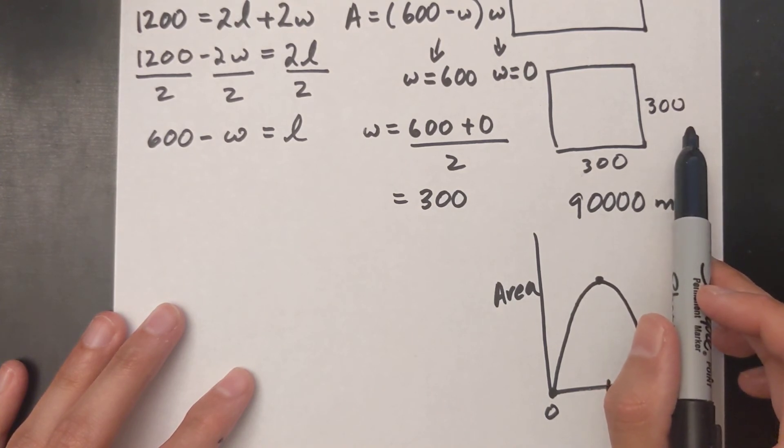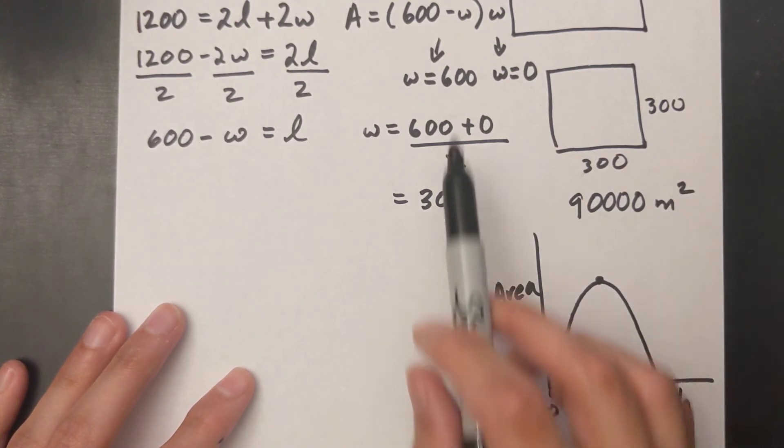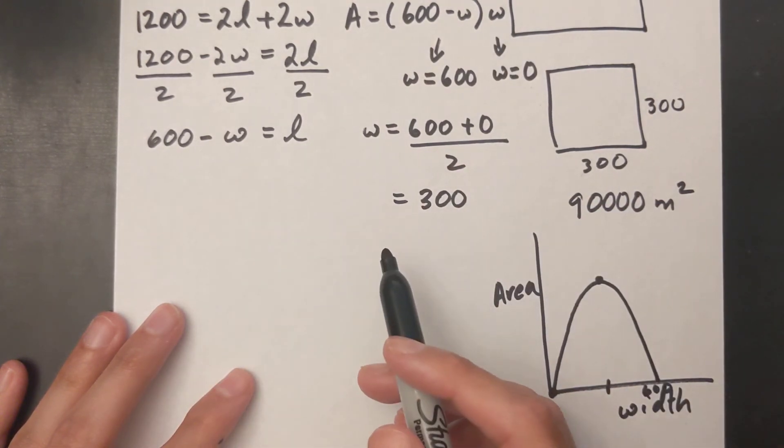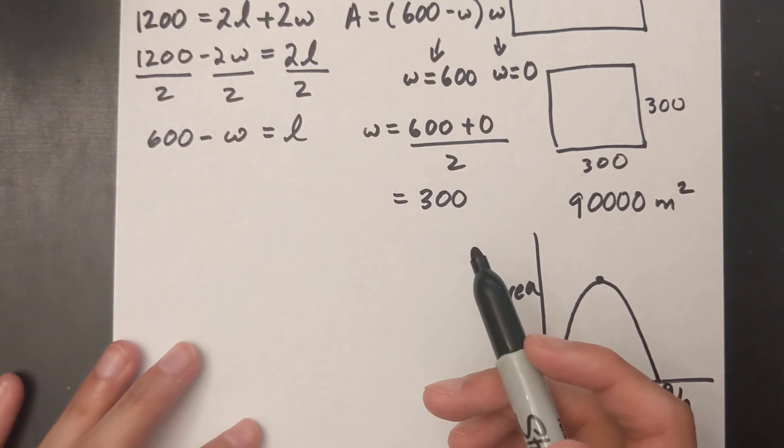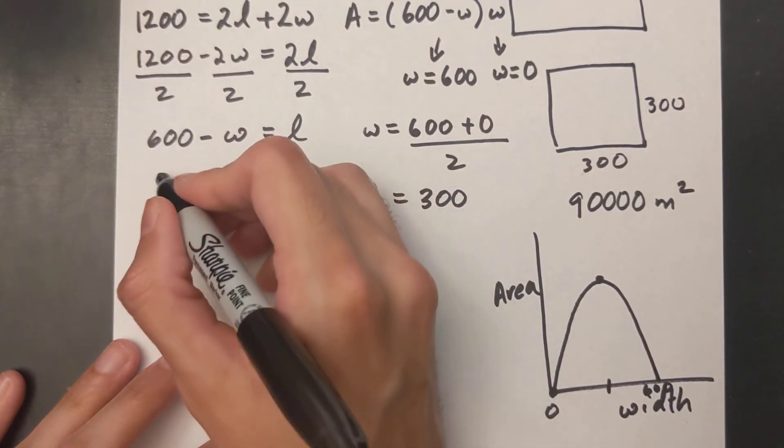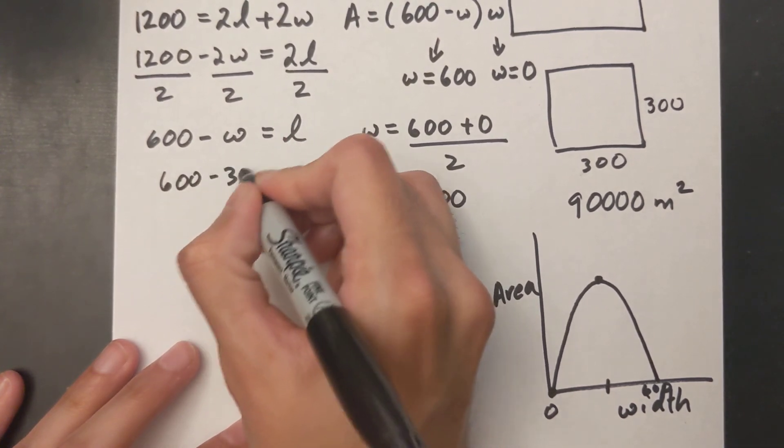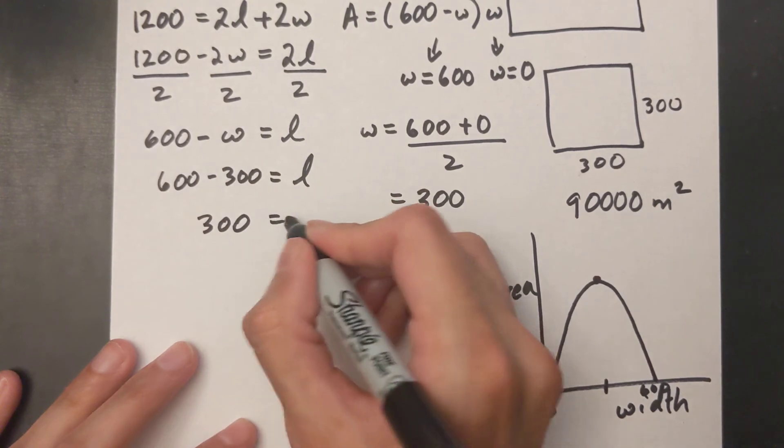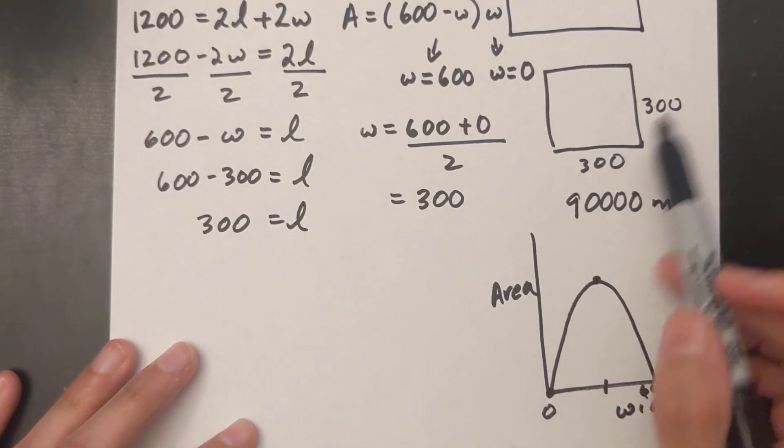Now I just have to sub this into my area equation. I can also find my length if I want using this one. There's two ways to do it, doesn't really matter. I'll find my length here first: 600 minus 300 is my length, so 300 meters is my length.